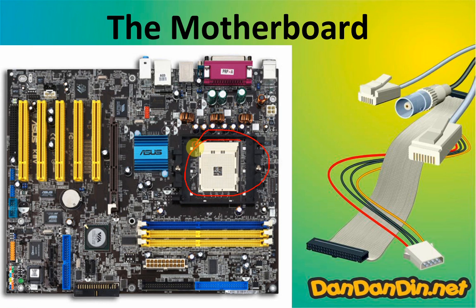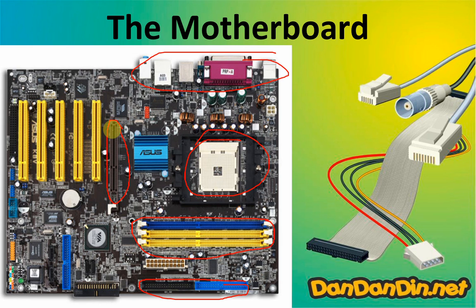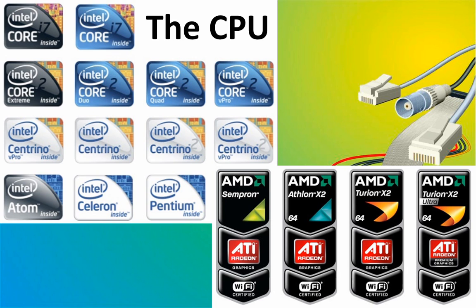Taking a closer look, we can see the CPU socket here — where the CPU sits. These are the ports for the outside, and this is for connecting the hard drive. This is for RAM — random access memory. This is the slot for the video card — you put the video card in here. And this yellow one is for additional cards, to enhance your computer. Nowadays, the motherboard has everything included, so it's not very useful.